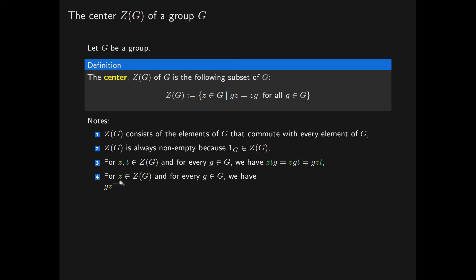Now given an element Z in the centre of the group, if we pick any element G in our group G, we have that G multiplied by Z inverse equals Z inverse Z G Z inverse. All we've done is attach an identity element to the left-hand side and rewritten it as Z inverse Z. Because Z belongs to the centre of G, Z and G commute, so we can rewrite this as Z inverse G Z Z inverse. This Z and Z inverse cancel, leaving us with Z inverse G.